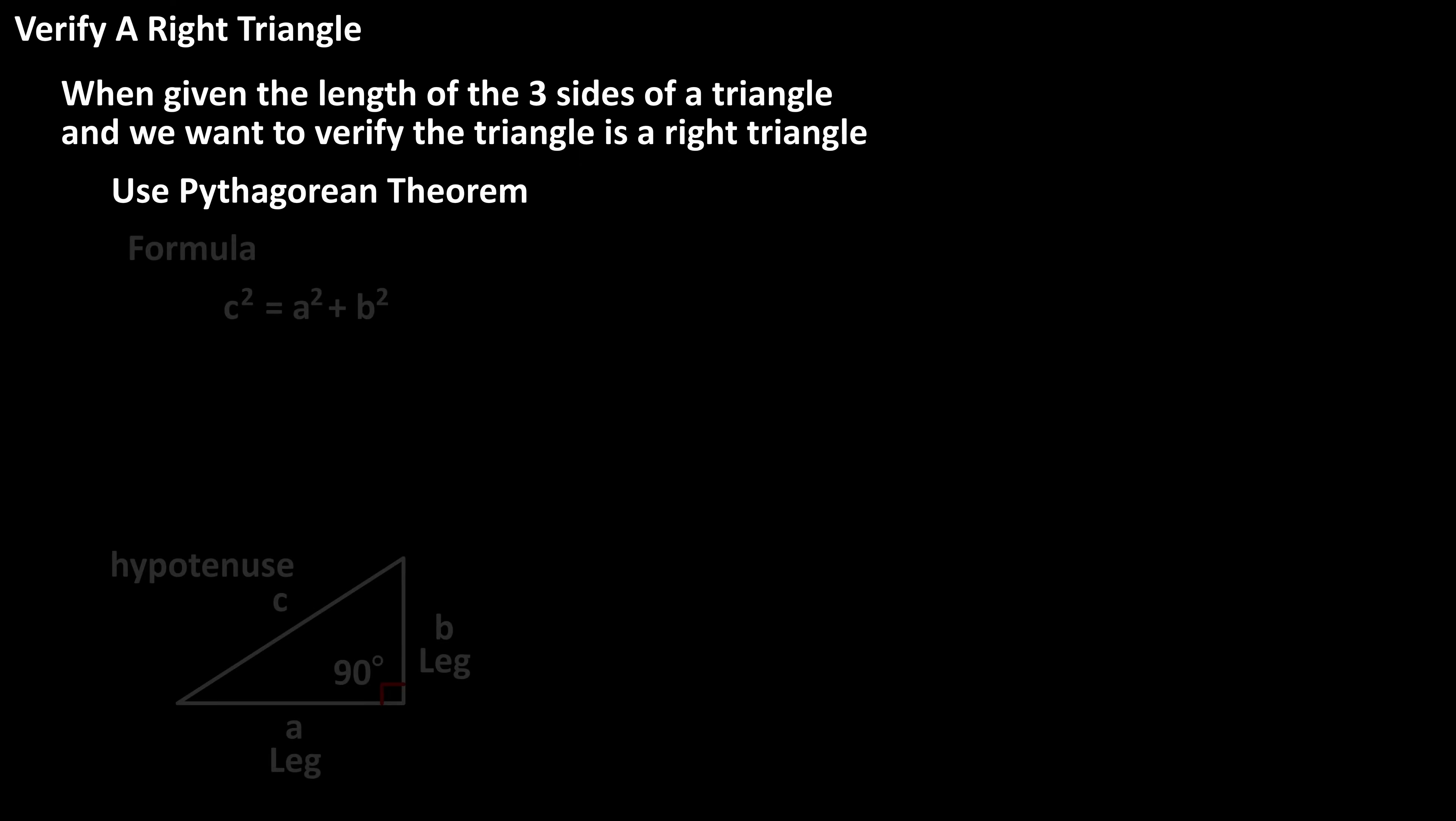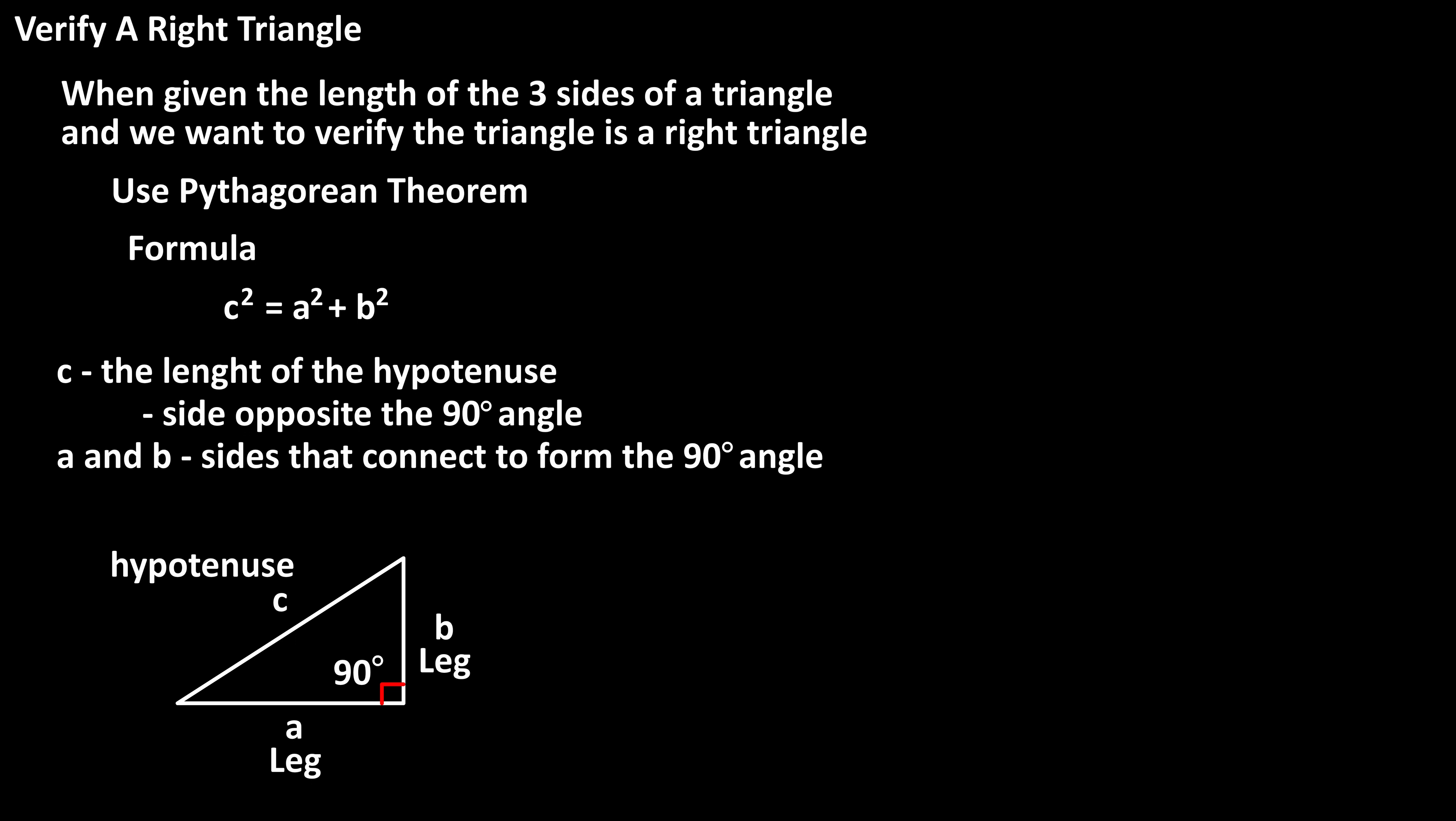The formula for the Pythagorean theorem is c squared equals a squared plus b squared. In this formula, c is the length of the hypotenuse, or the side opposite the 90 degree angle. And a and b are the lengths of the sides that connect to form the 90 degree angle in the triangle, which are often referred to as legs.